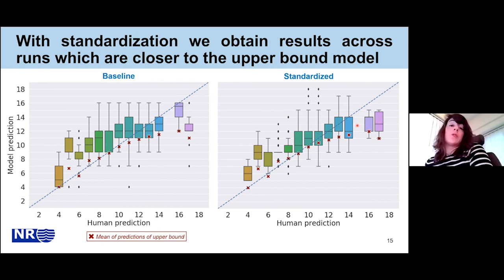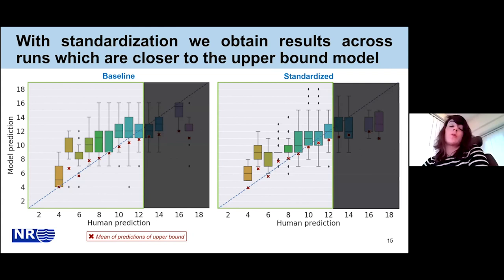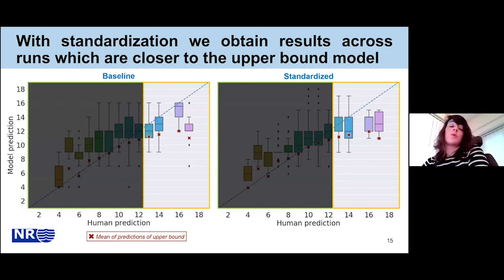Focusing on ages lower than 12, the standardized data gives results closer to the upper bound model and with less variability in predictions across the five runs. For ages older than 12, the baseline data shows slightly less variability, while the standardized data gives results closer to the upper bound model.